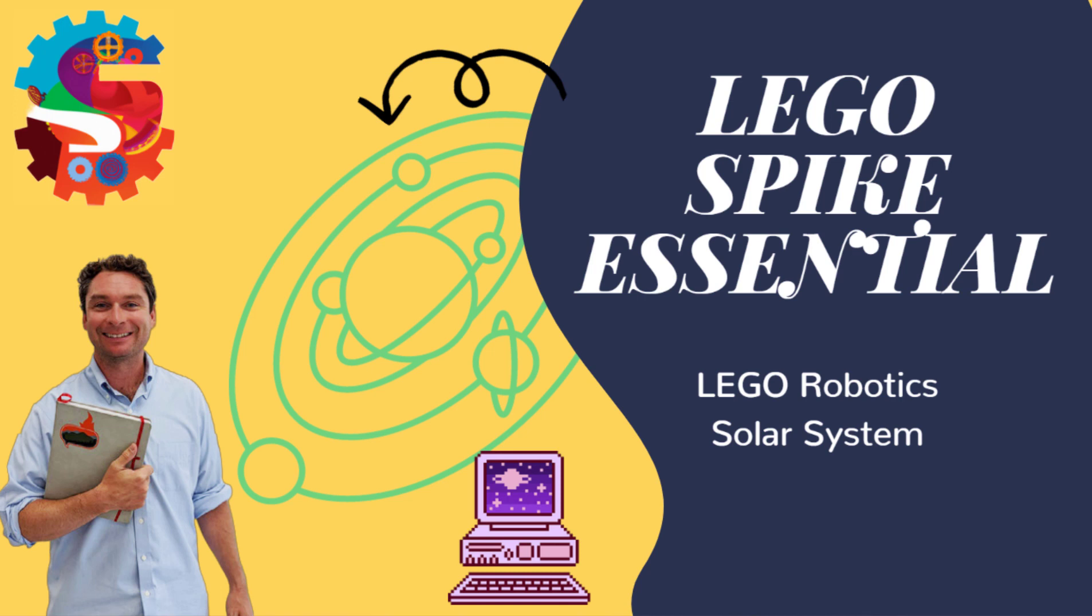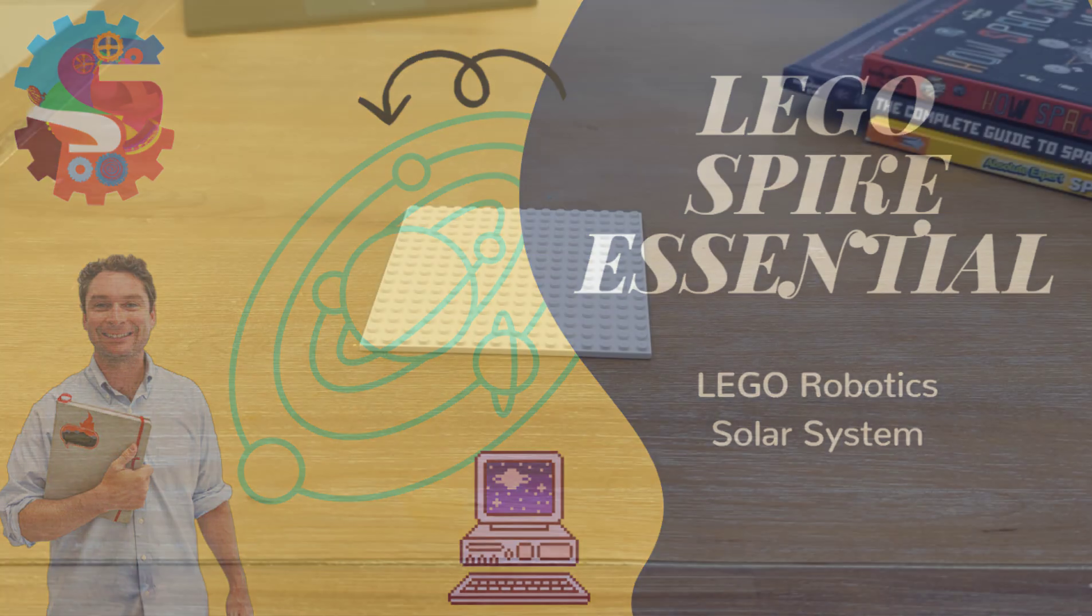It's Space Week here at Sprattronics Learning Lab, and our goal for today is to build a mini-model of the solar system. Maybe have a sun in the middle, and then an earth and a moon rotating around it.